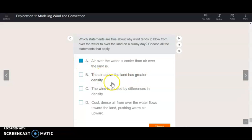The air above the land has greater density. Remember, we said that cold air is more dense and sinks. If the air over the water is cooler, then the air over the water is more dense. Therefore, B is false. Not true. We will not click on it.